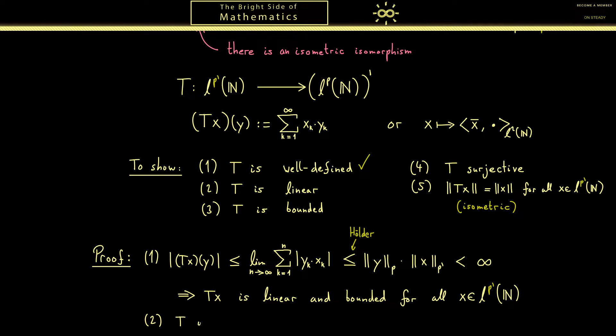The next step is then that T is a linear map. This is so simple that I don't have to write down anything. I just say you know the properties of the inner product. So let's tick the linearity and go to the boundedness.